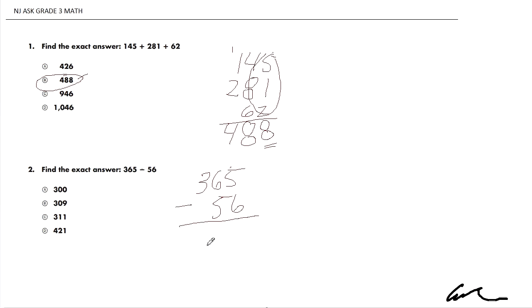So, 365 minus 56. There's a number of ways to do this, but the way we're all familiar with is we're going to reduce this to 5. We're going to borrow 1. We're going to say 15 minus 6 is 9.